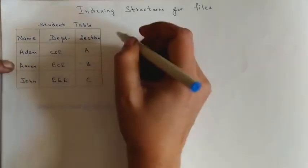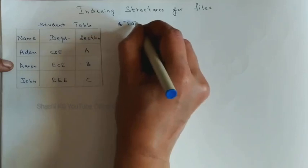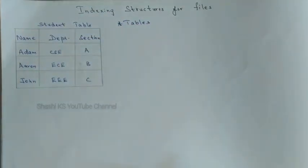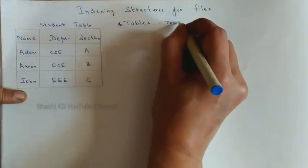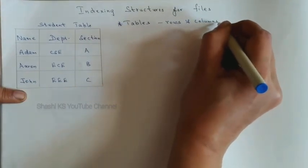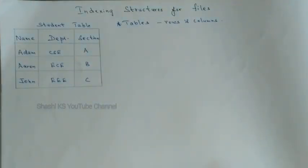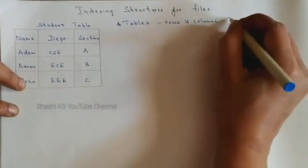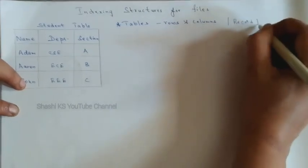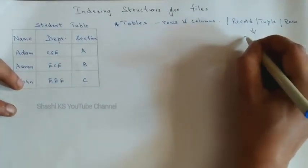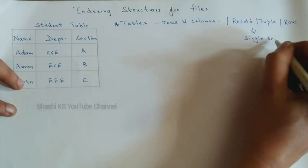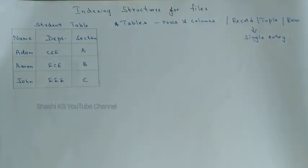Data is organized in the database in the form of tables or relations. In a relational database model, a table is a collection of data elements organized in terms of rows and columns. A single entry in the table is called a tuple, a record, or a row, and a tuple represents a set of related data.